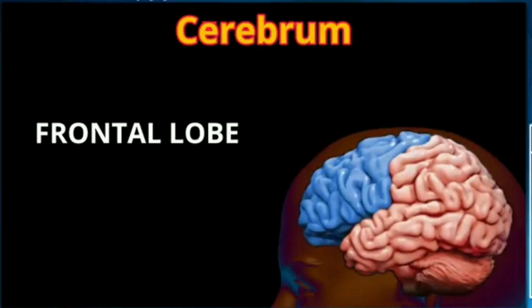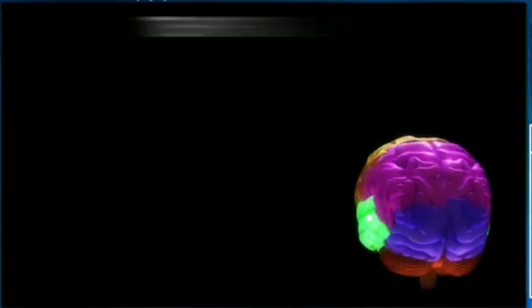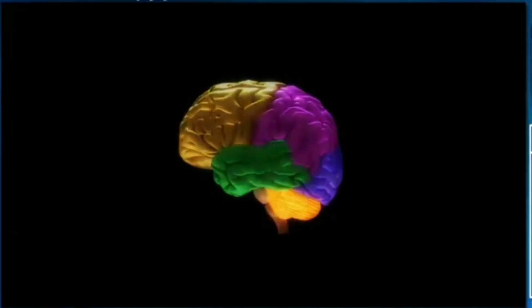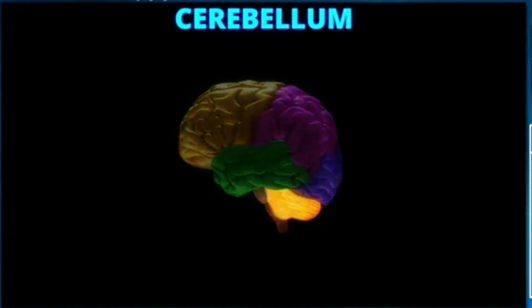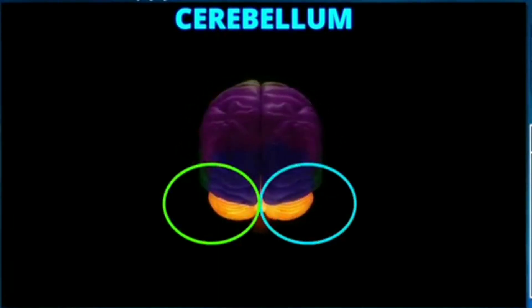Yes, it is this one — the one present in the front. The highlighted lobe here is called the parietal lobe. The next lobe is called the temporal lobe. The fourth and last lobe is the occipital lobe. The small bulge at the back of your brain is called the cerebellum. Just like the cerebrum, this cerebellum is also divided into two halves. It's called the small brain.